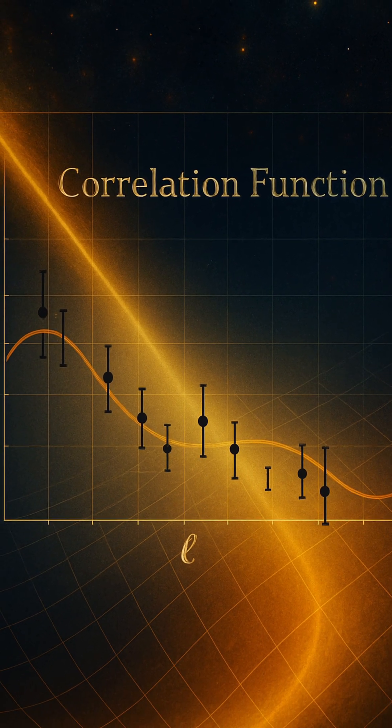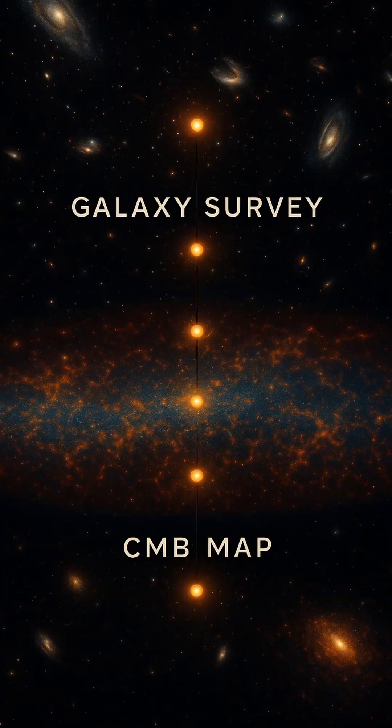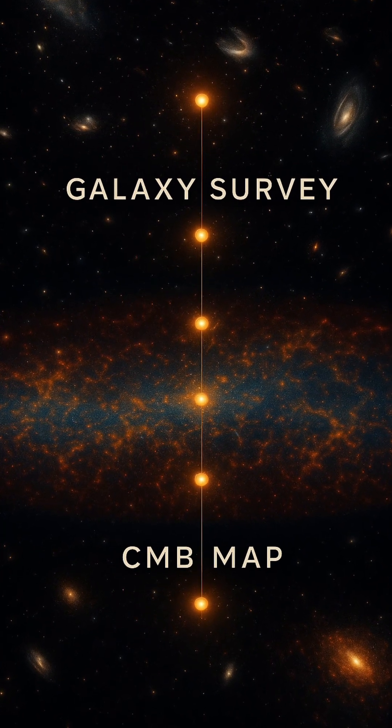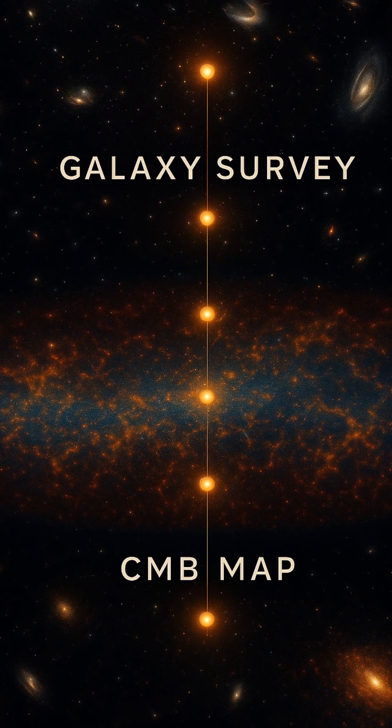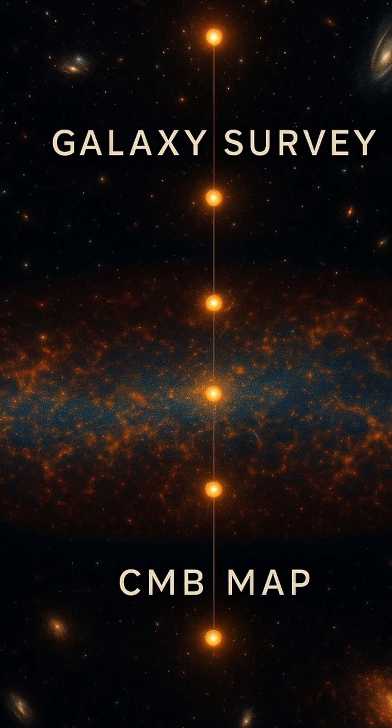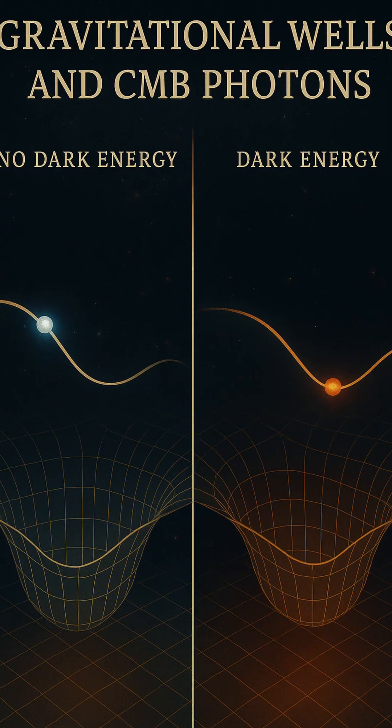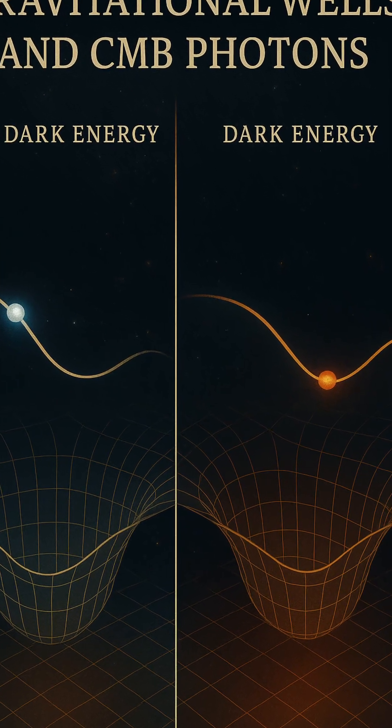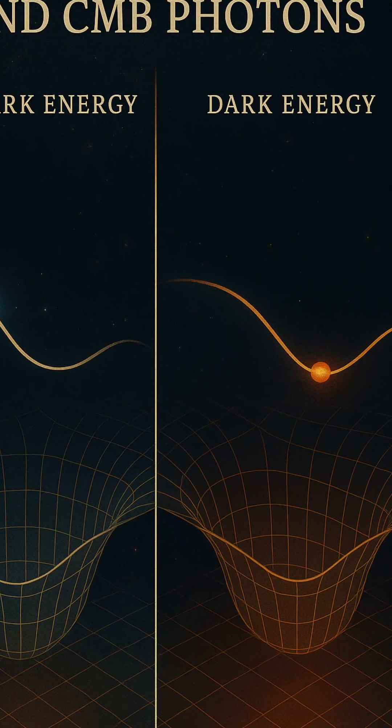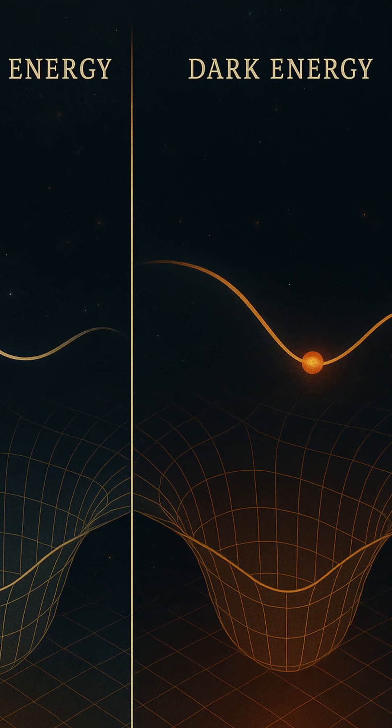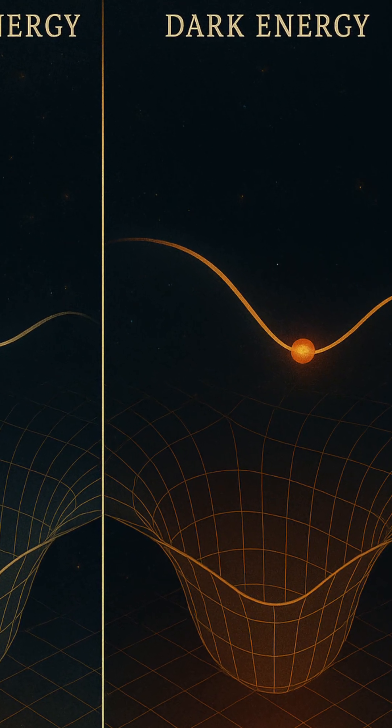In essence, the Integrated Sachs-Wolfe effect acts like a whisper from the cosmos, quietly reinforcing the radical notion that space itself is stretching faster over time. Through the combined efforts of CMB satellites like WMAP and Planck, and galaxy surveys like SDSS, this whisper has become a vital clue in unraveling one of modern cosmology's deepest mysteries.